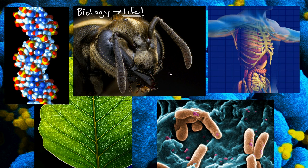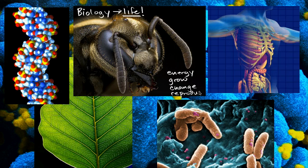Living things convert energy from one form to another. They use that energy to grow. They use that energy to change — and growth is a form of change. They use that energy to reproduce. And these are all, in and of themselves, fascinating questions. How do they do this?